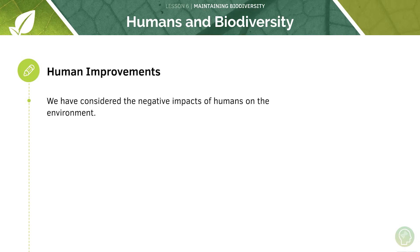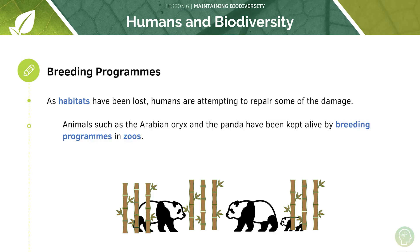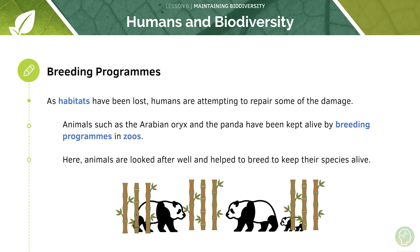We've considered the negative impacts of humans on the environment, but this tutorial will look at a few of the positive measures put in place to increase biodiversity. For example, breeding programs. As habitats have been lost, humans are attempting to repair some of the damage. Animals such as the Arabian oryx and the panda have been kept alive by breeding programs in zoos. Without these, these species would probably have gone extinct, so animals in zoos are looked after well and helped to breed to keep their species alive.